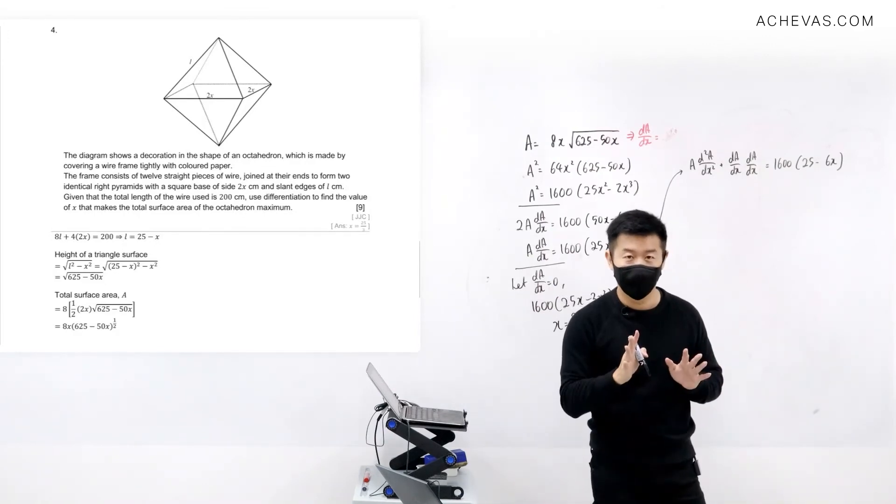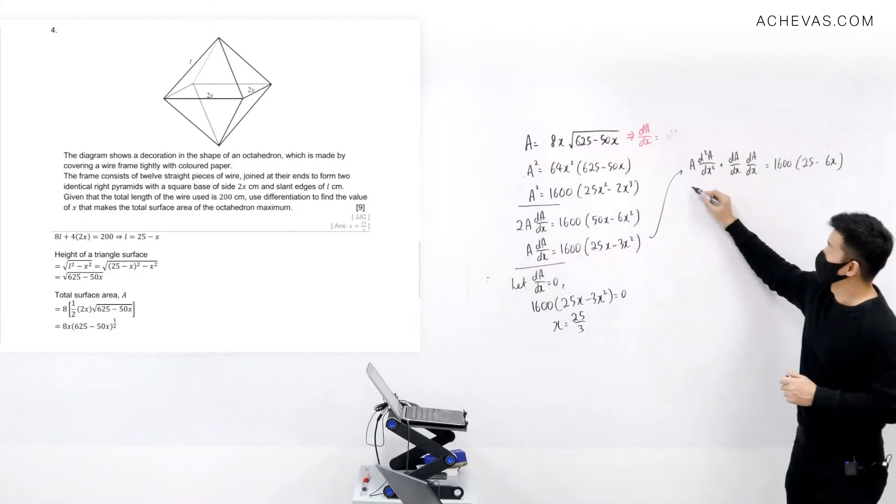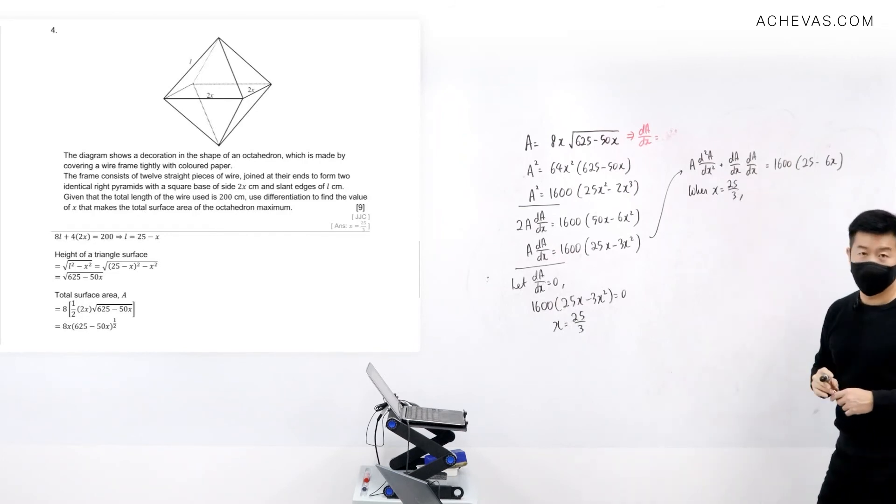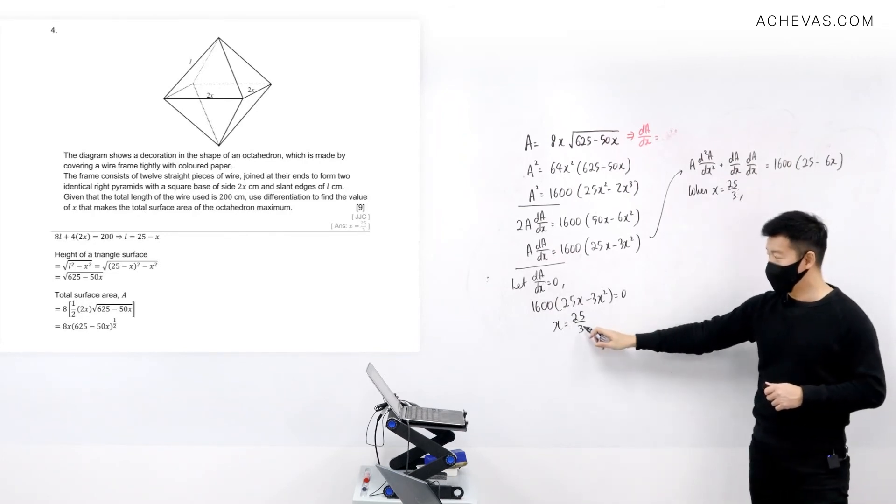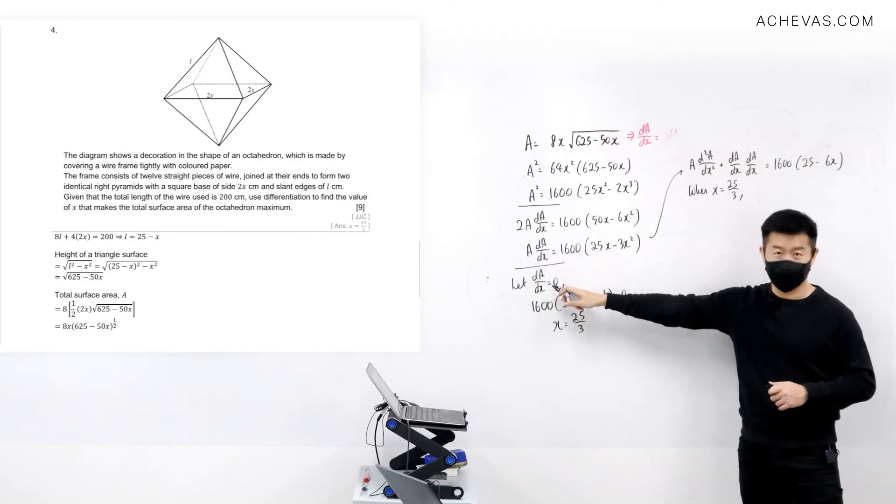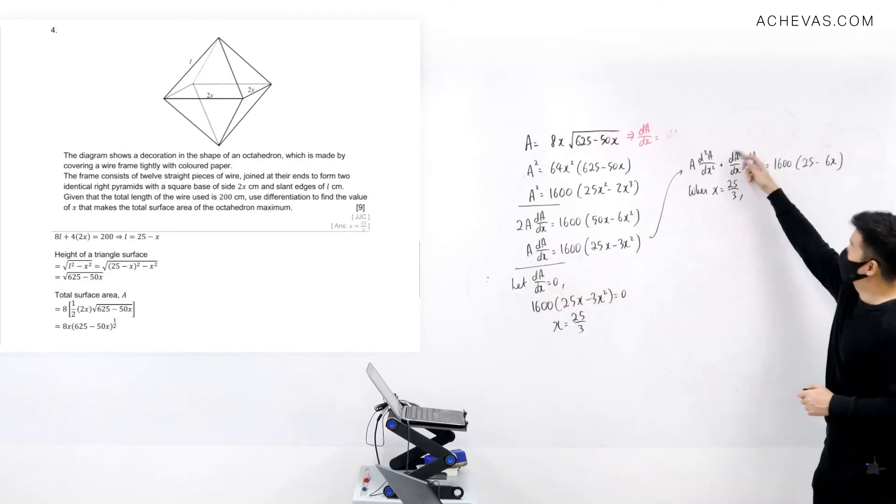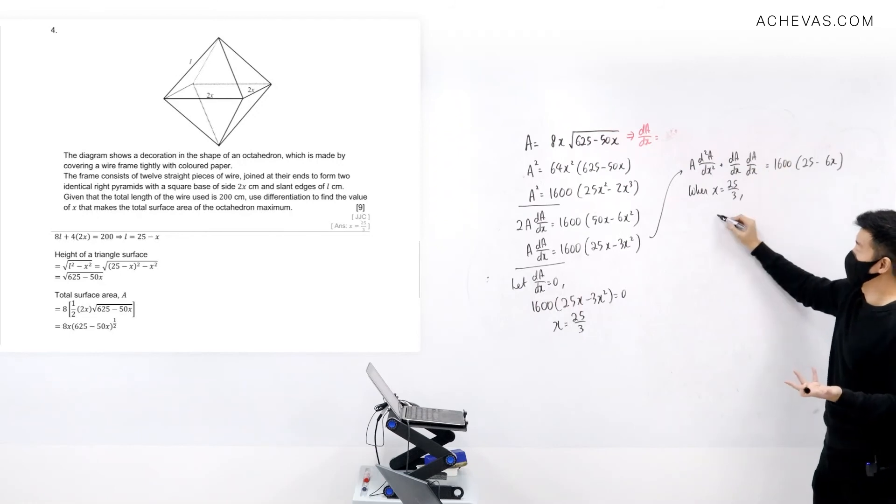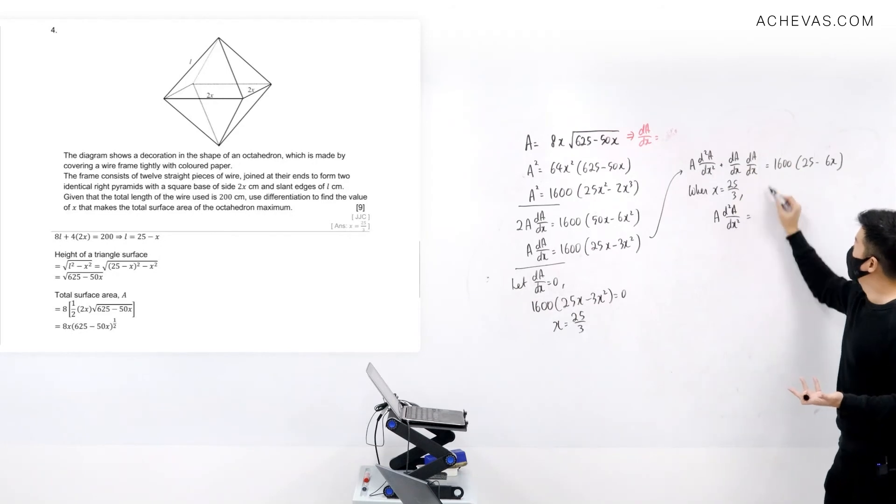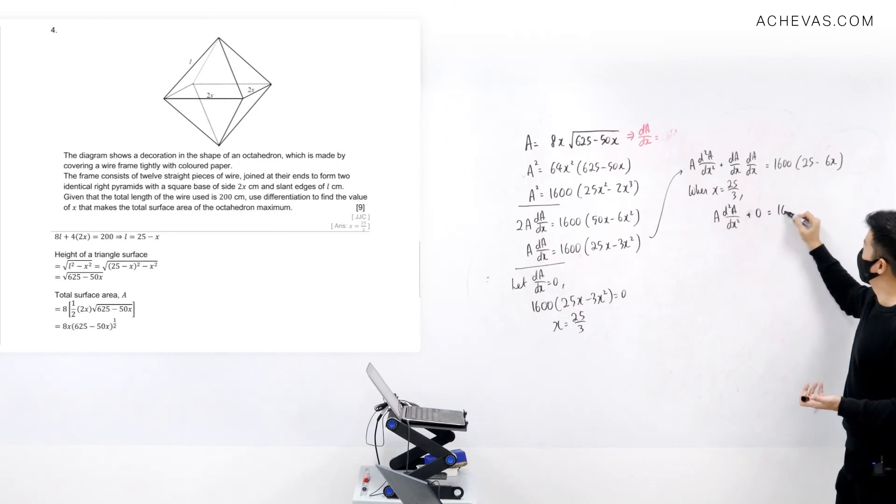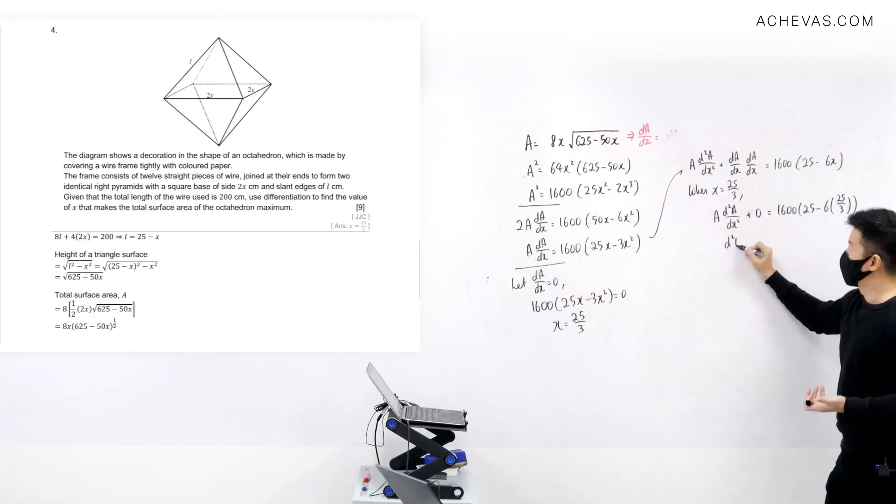It's very very easy to execute because when x = 25/3, you know dA/dx = 0. Okay, so this entire expression here will just disappear. So it will be just A d²A/dx² = 0 (I'm going to write down the +0 because this is going to be zero) = 1600(25 - 6 × 25/3).